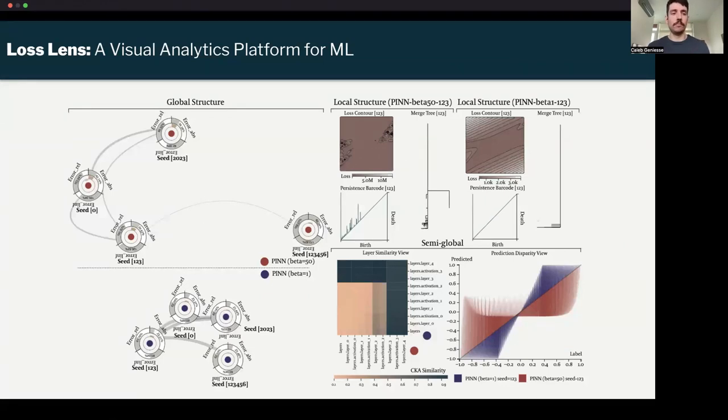Now I'm going to talk about our platform that combines all of these ideas. We call it LossLens, and it's a visual analytics platform for machine learning. I know this is a lot, so I'm going to step through some of the individual components and explain what's going on.